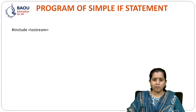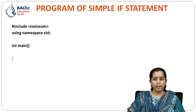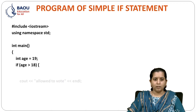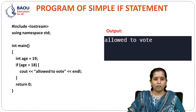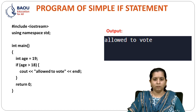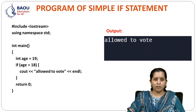Now let's see one simple program of the simple IF statement. First of all, we will include iostream. After that, using namespace std, in int main, we will write one variable age and compare that if age is greater than 18, then we will display 'allowed to vote' in our program. When I execute this program, the output is 'allowed to vote' because the variable age is equal to 19 and 19 is greater than 18.